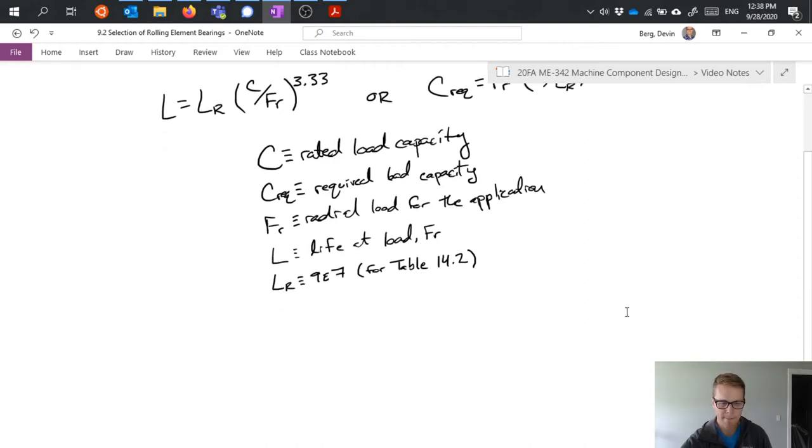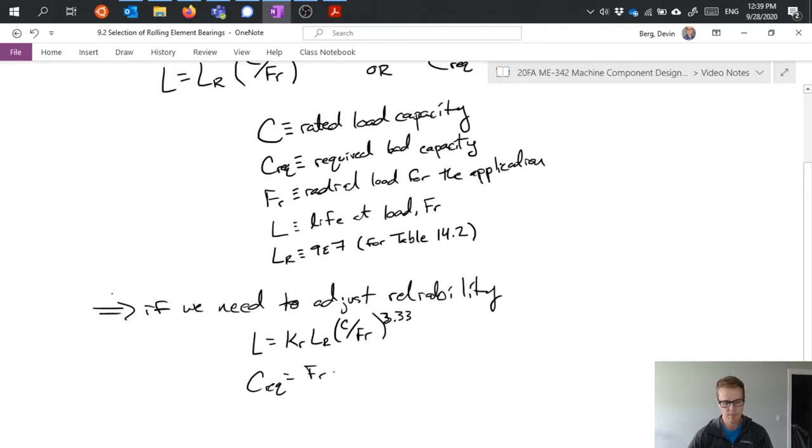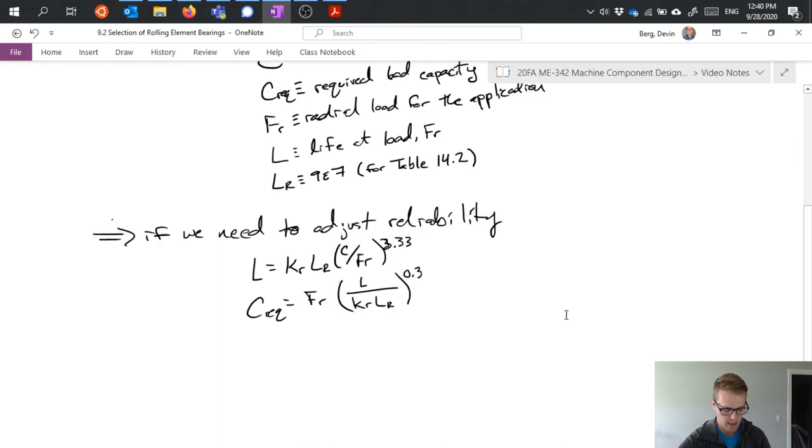This assumption for the two equations and for that table is for 90 percent reliability, and we can make an adjustment to that. We can adjust our reliability by modifying these equations with a reliability factor k sub R, and I end up with something like that where I've factored in k sub R, which is a reliability factor.